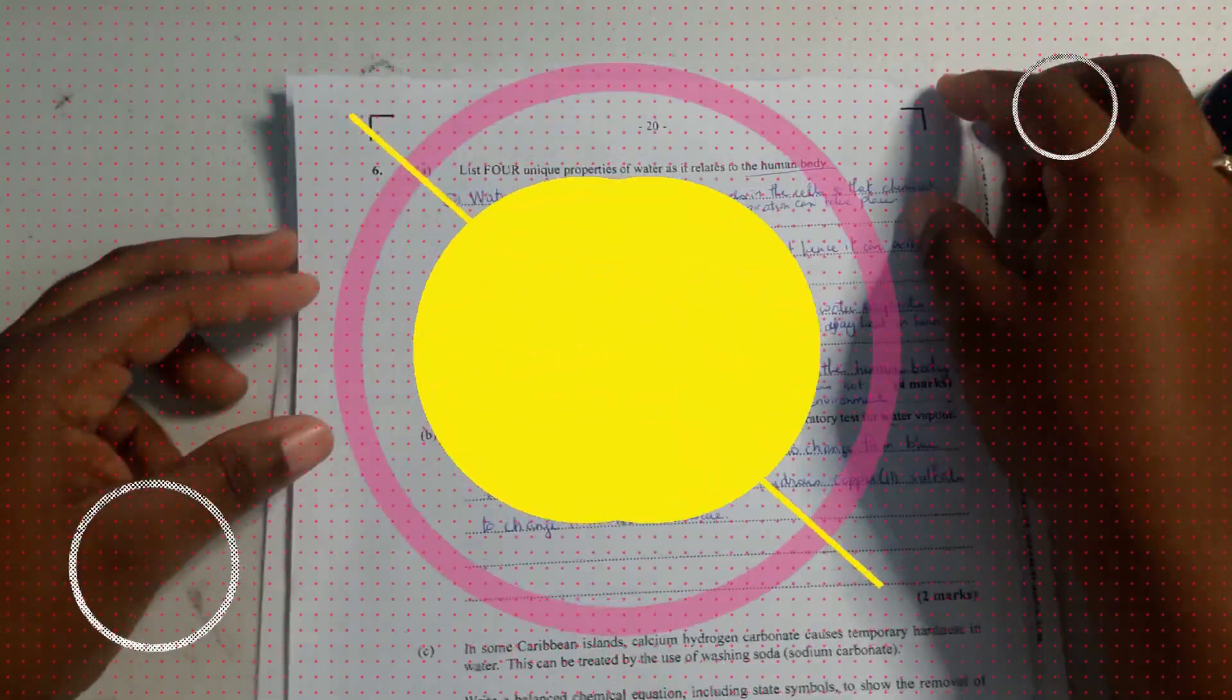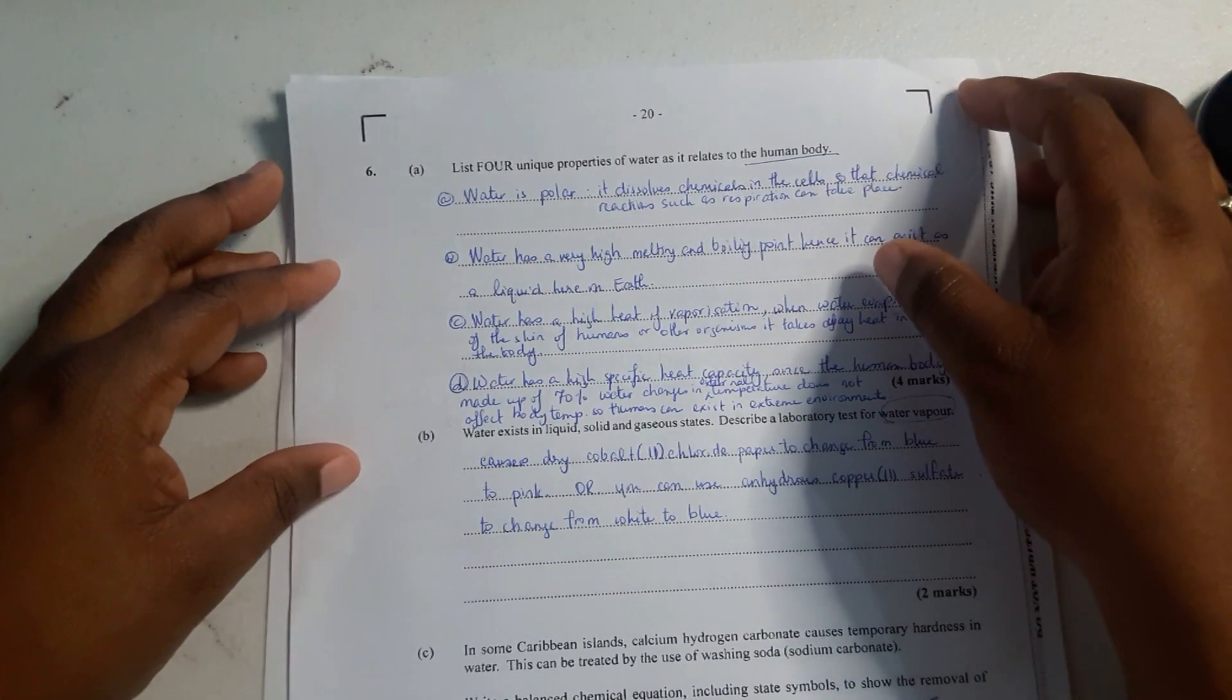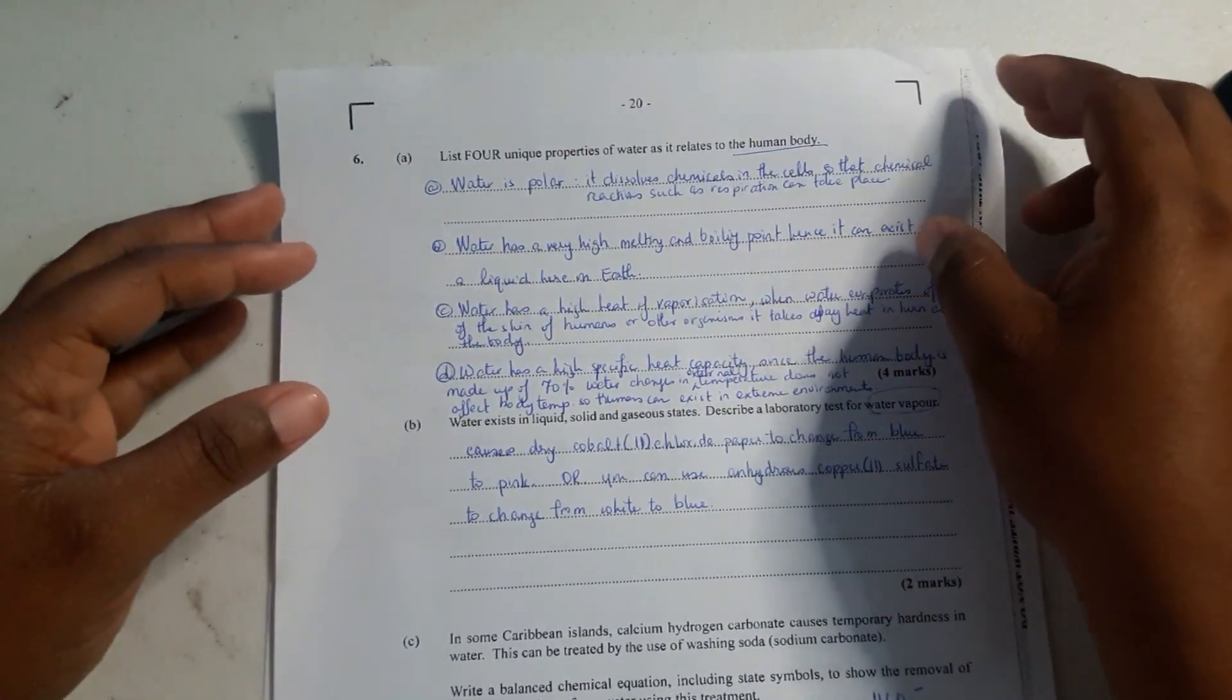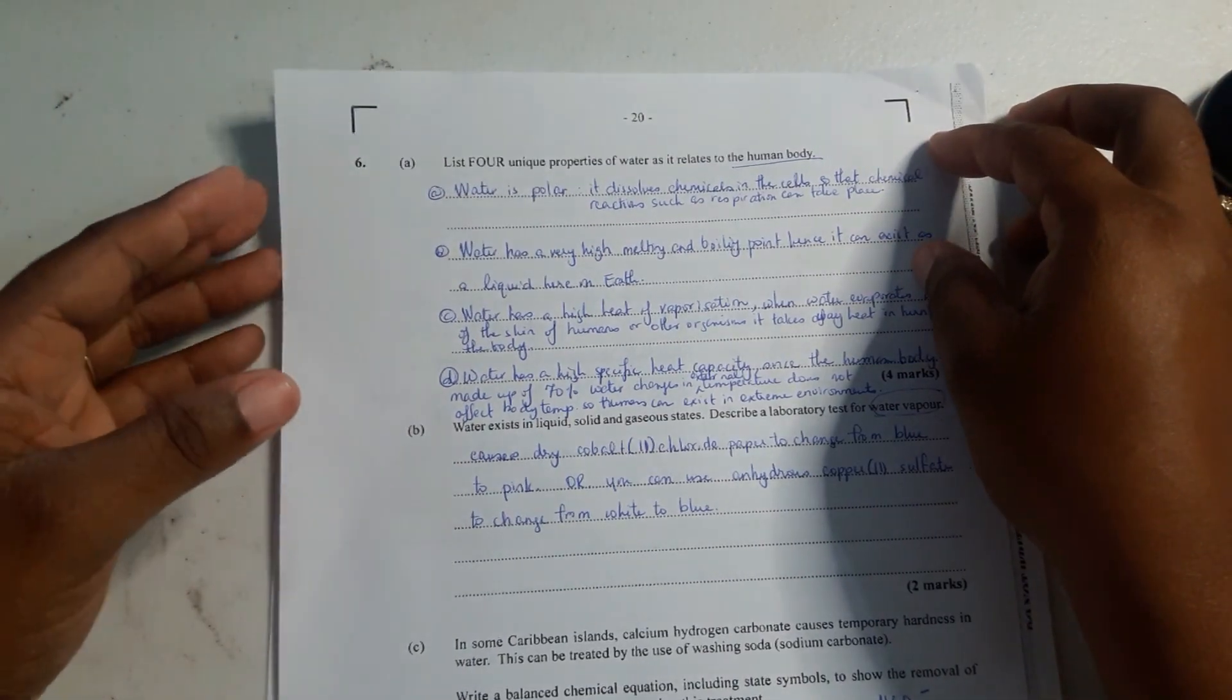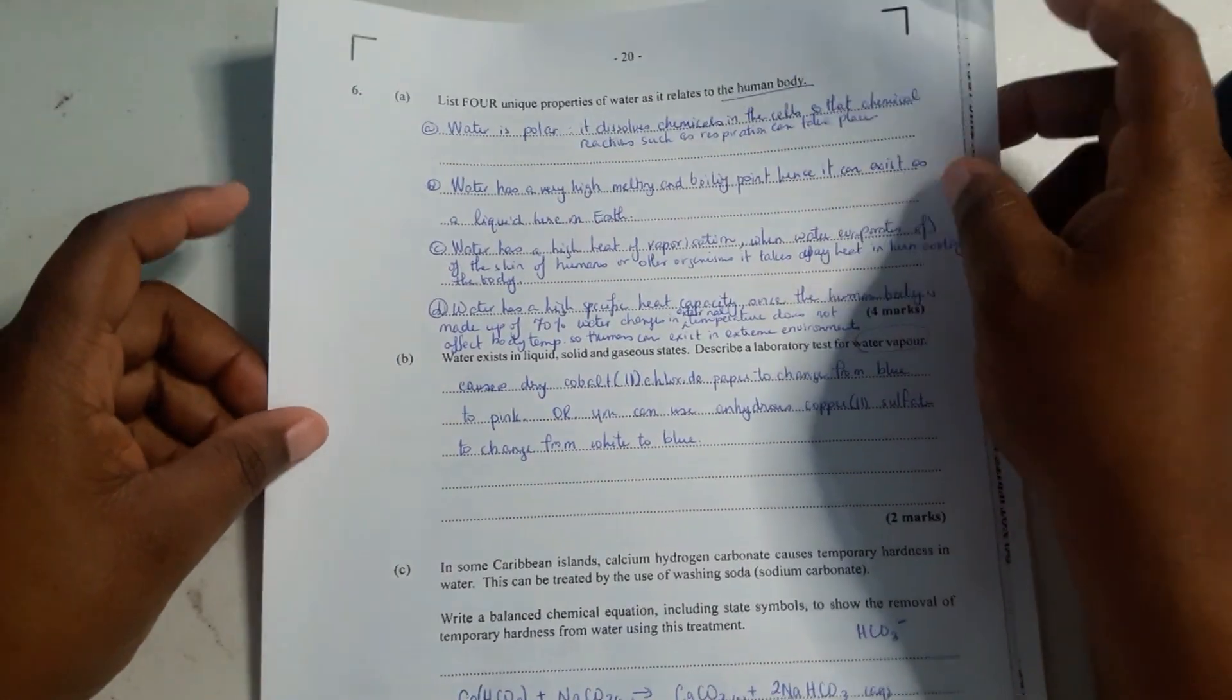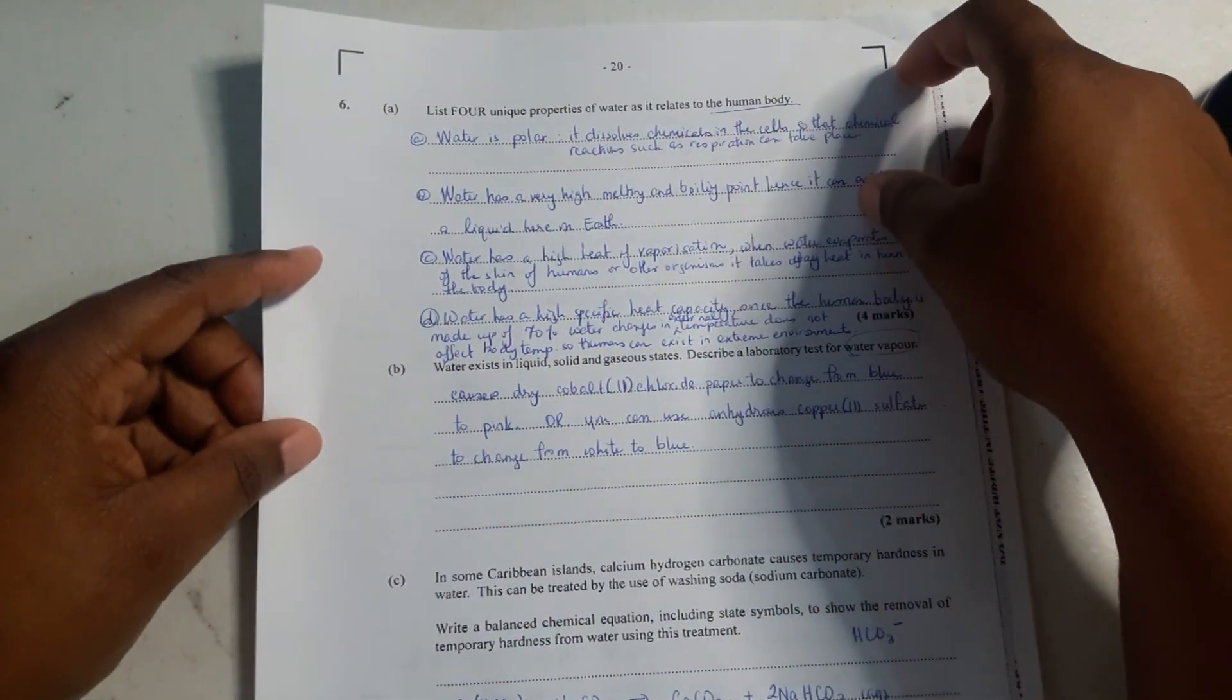Okay, so welcome back. We are on question 6, took me long enough, and this is the last question in the chemistry past paper for January 2018. Now it asks: list four unique properties of water as it relates to the human body.